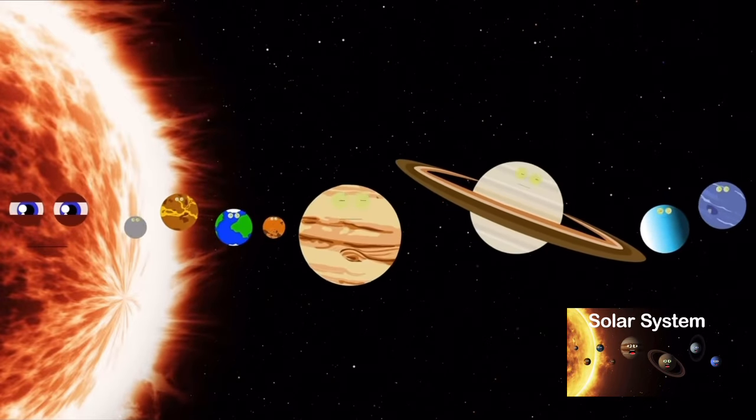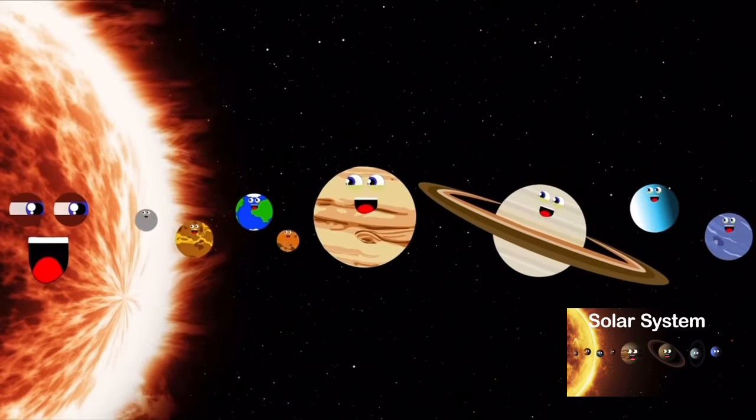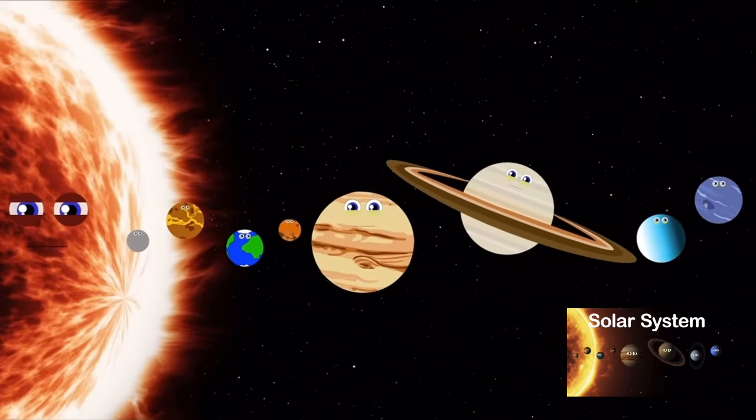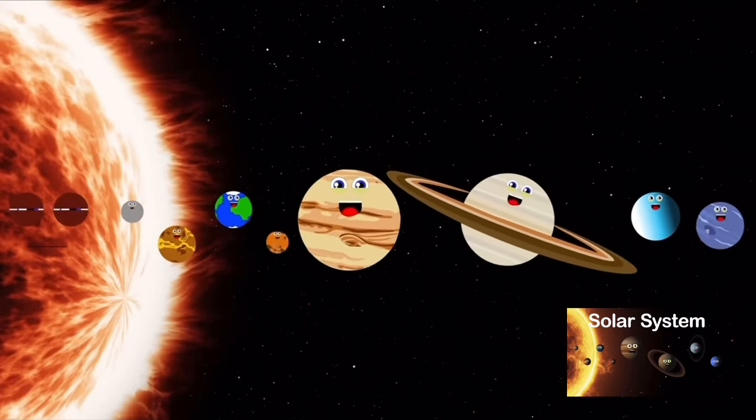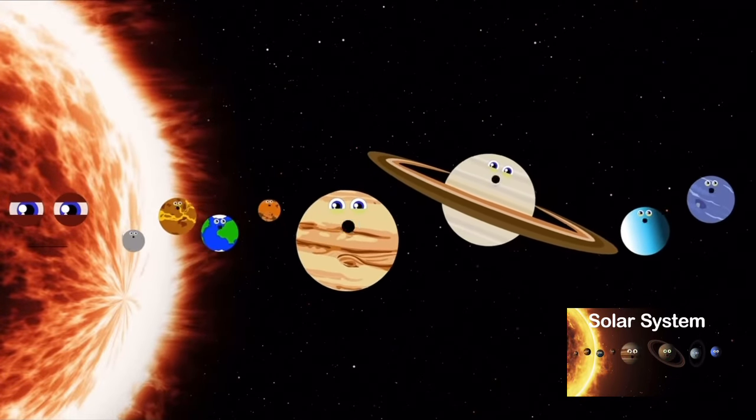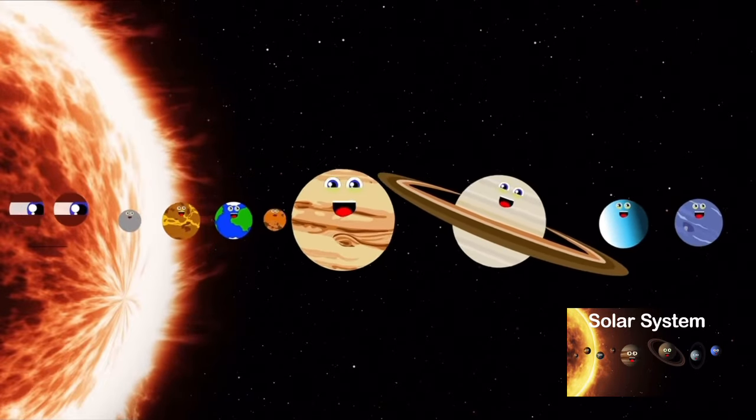There are eight planets in the solar system, and we revolve around the sun. Join us to learn about the different planets, now sing along and have some fun.